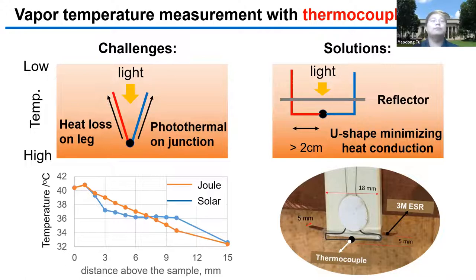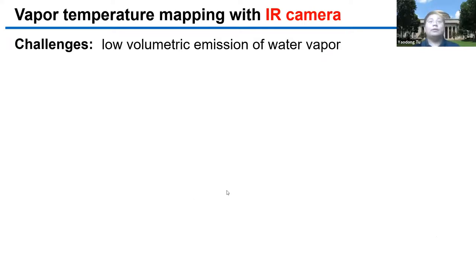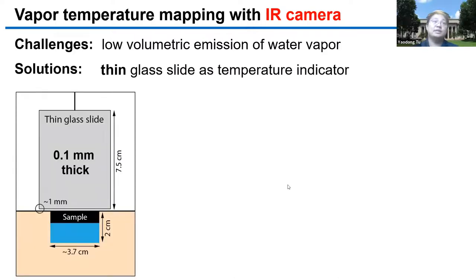We are also trying to map the vapor temperature using IR camera. However, IR camera can't directly measure the vapor temperature because the vapor has very low emissivity. Here, we propose to use a thin glass slide as the vapor temperature indicator. The glass slide has very small heat capacity, so it should have faster response and more easily get thermal equilibrium with vapor. Secondly, glass has low thermal conductivity, so if the glass slide is thin enough, it can precisely reflect the vapor temperature locally.